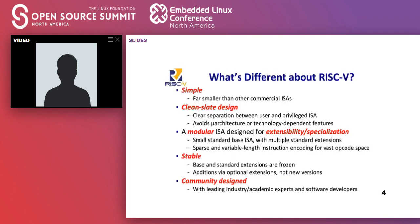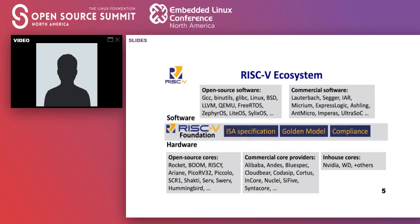What makes RISC-V special? One of the key things is that it's simple — a clean design based on all the insight the team at Berkeley had over decades of designing instruction sets. It's also modular, meaning it can scale from a microcontroller all the way up to a supercomputer. One of the ways it does this is by breaking things up into extensions.